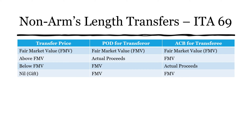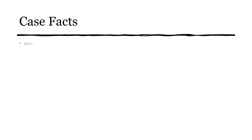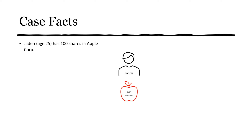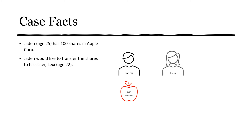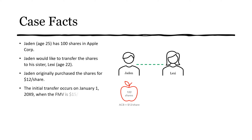Let's look at some case facts. Jayden, who is 25, has 100 shares in Apple Corp and would like to transfer the shares to his sister Lexi, who is 22. Because they are related, I'll indicate that with a dotted green line between them. Jayden originally purchased the shares for $12 a share, so his adjusted cost base is $12 a share. The initial transfer from Jayden to Lexi occurs on January 1st, when the fair market value is $15 a share.